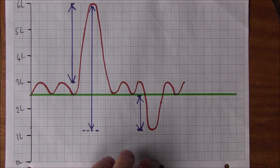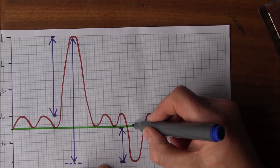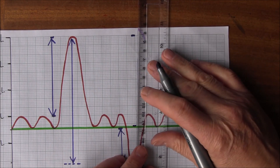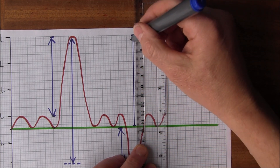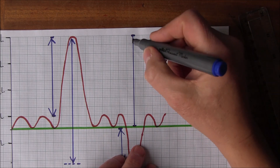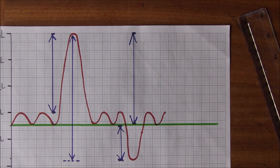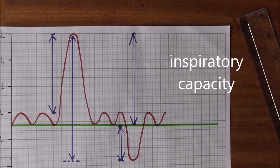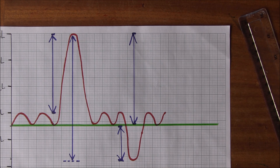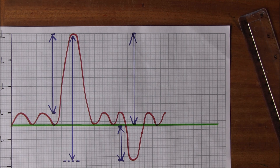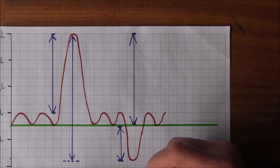There's another figure: from where I normally stop breathing out to the most I can ever breathe in — that is called the Inspiratory Capacity. That's the Inspiratory Reserve Volume plus the Tidal Volume, so that's going to be about 3,600 mils in men and 2,400 mils in women.